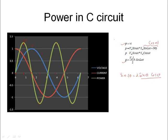If f is the frequency of the voltage and current waveforms, then the power waveform has a frequency of 2 times f — because the power completes two full cycles for every one cycle of voltage or current. That is why the power equation contains sin 2 omega t.